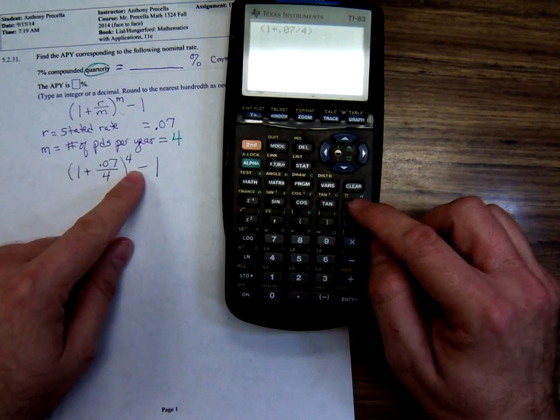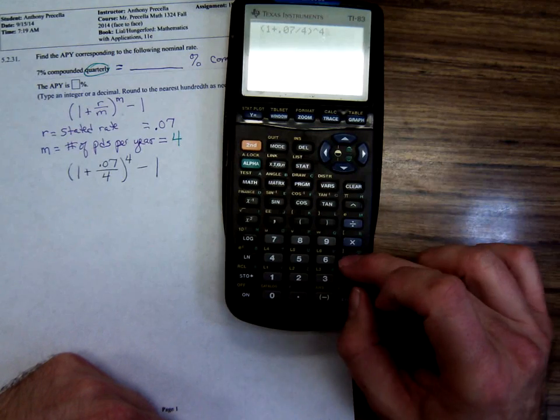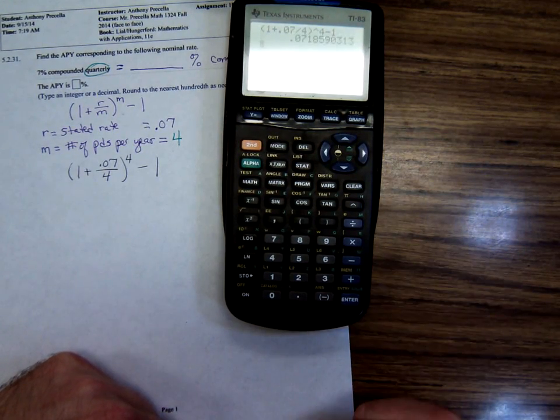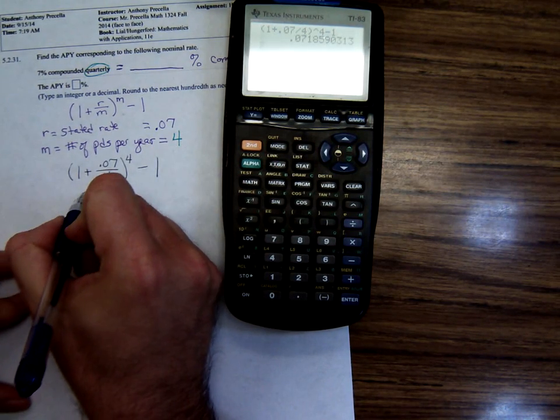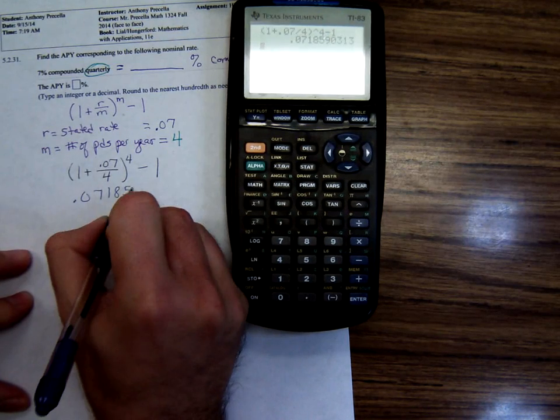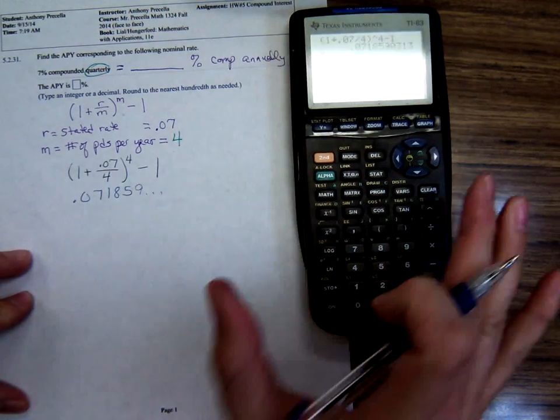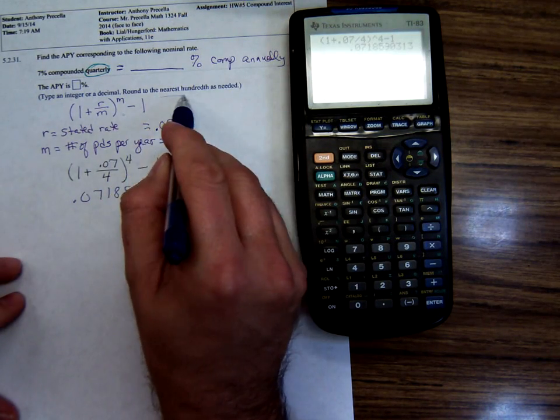Now raised to the fourth power, I'll go arrow four. Then I minus one. And it's showing point 071859 dot dot dot.